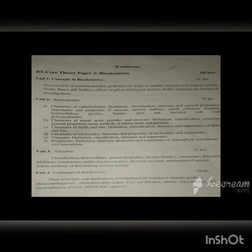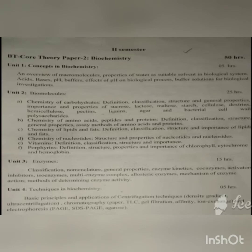In the second unit we will be discussing about the chemistry of carbohydrates, amino acids, proteins and the configuration of proteins and lipids, nucleotides, vitamins and porphyrins. This is a very big unit of 25 credits.